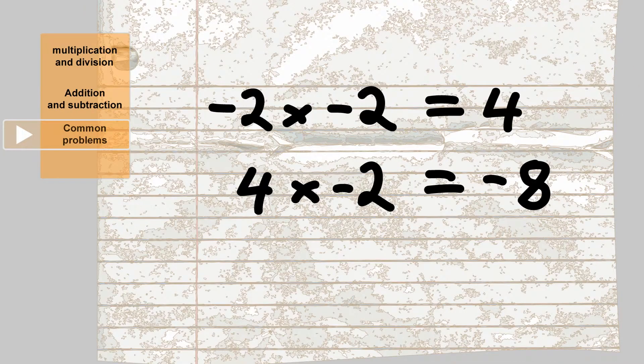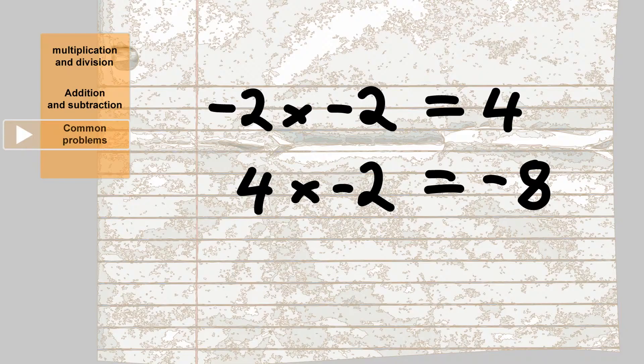The trick here is to multiply it out in stages. Take the first two negative minus 2s and multiply them by each other. Minus 2 times minus 2 equals positive 4. Then take the positive 4 and multiply it by negative 2, and you have negative 8.